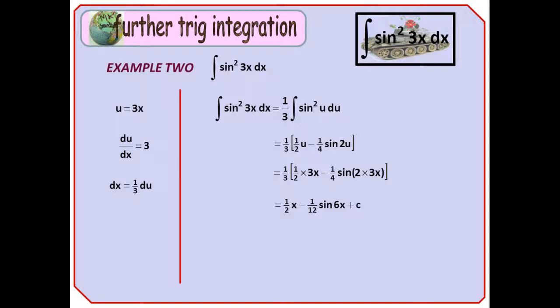But when we replace the u with a 3x and multiply out, we get a half x, like we would have anyway, minus a twelfth of sine 6x, which is less surprising, plus c, of course.